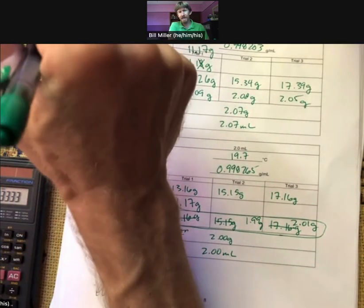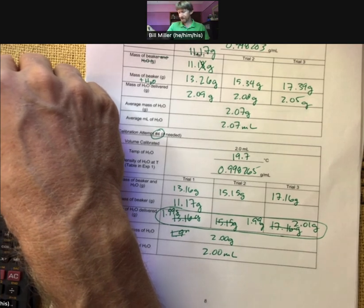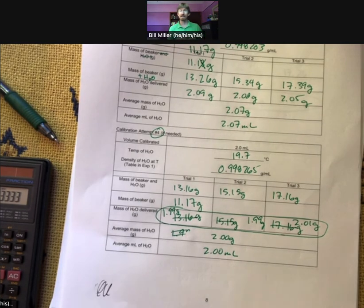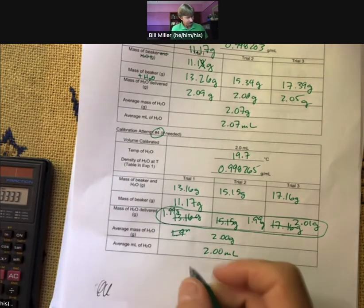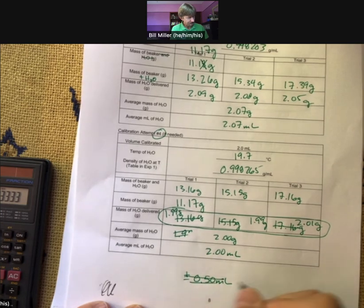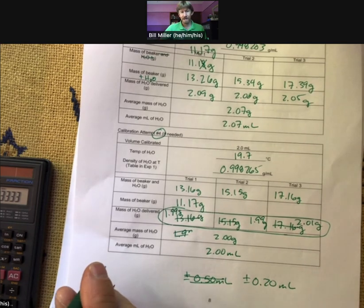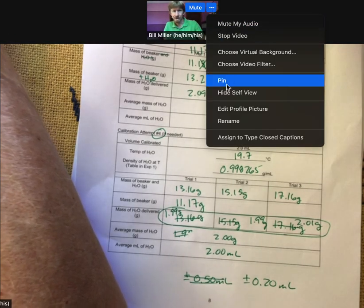Those six good values will be used to calculate a standard deviation later. You're going to repeat this exact same process for 1 milliliter and 0.50 milliliters. For the graduated cylinder, you only need six measurements, and those six measurements have to be within plus or minus 0.20 milliliters of 50 mL. You'll create tables just like this to mirror the ones you have for the pipettes.